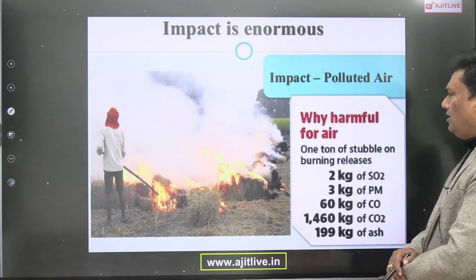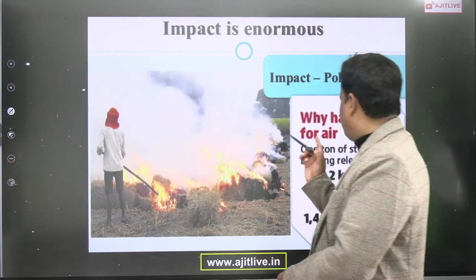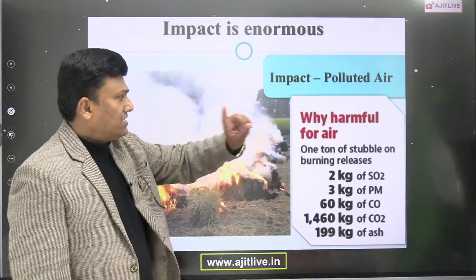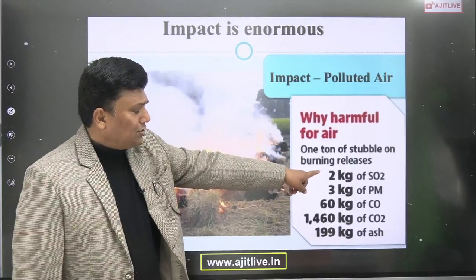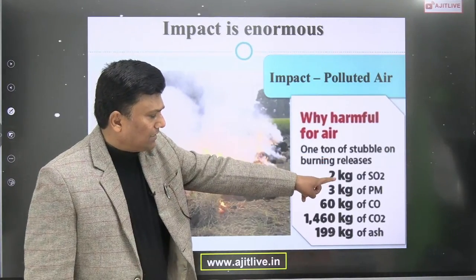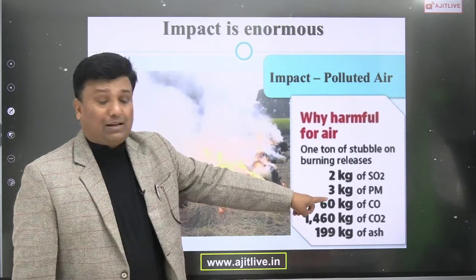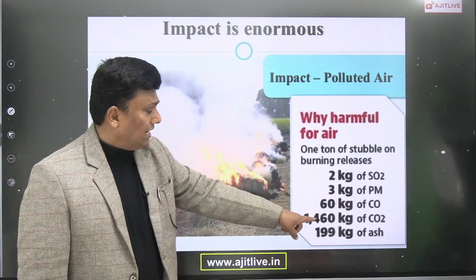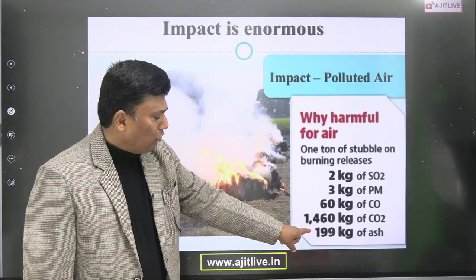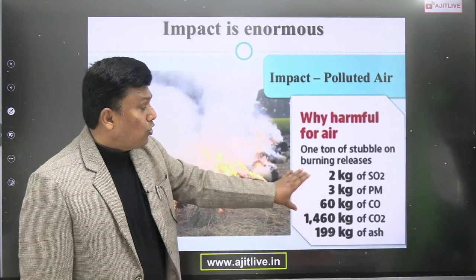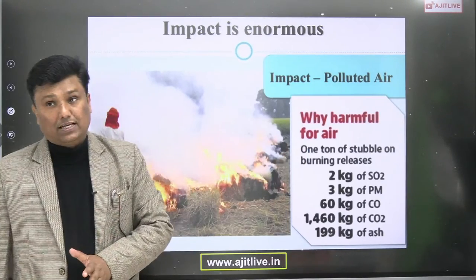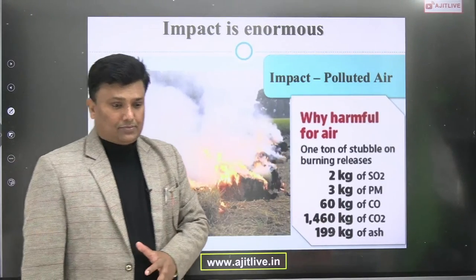Important data: one ton of stubble burning releases 2 kg of sulfur oxide, 3 kg of particulate matter, 60 kg of carbon monoxide, 1,460 kg of CO2, and 199 kg of ash. One ton of stubble — this is a serious problem.